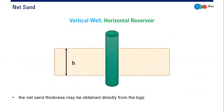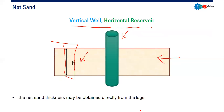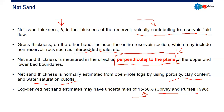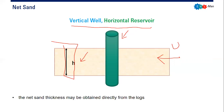The first case is a vertical well with a horizontal reservoir. We have the vertical well here and the reservoir horizontal. You can see H, our net sand thickness, is perpendicular to the plane of the upper and lower boundaries — 90 degrees here. The net sand thickness may be obtained directly from the logs in this case.